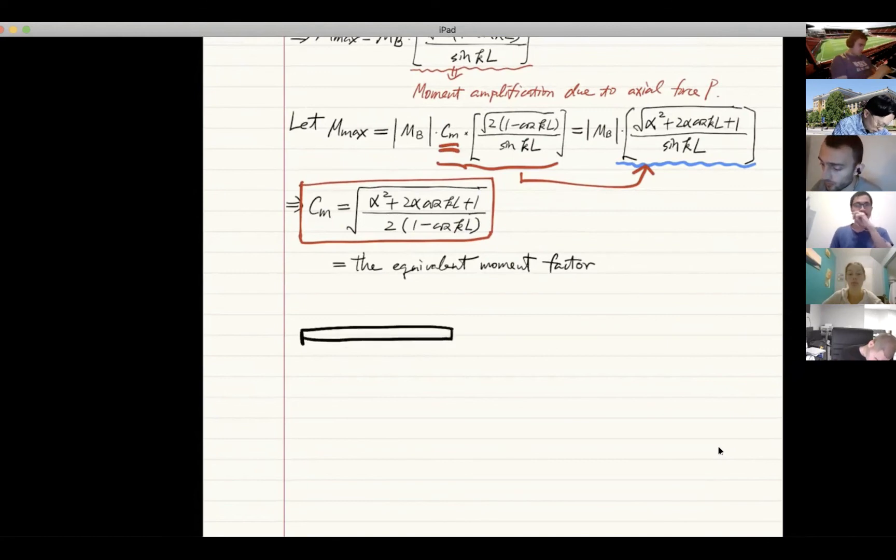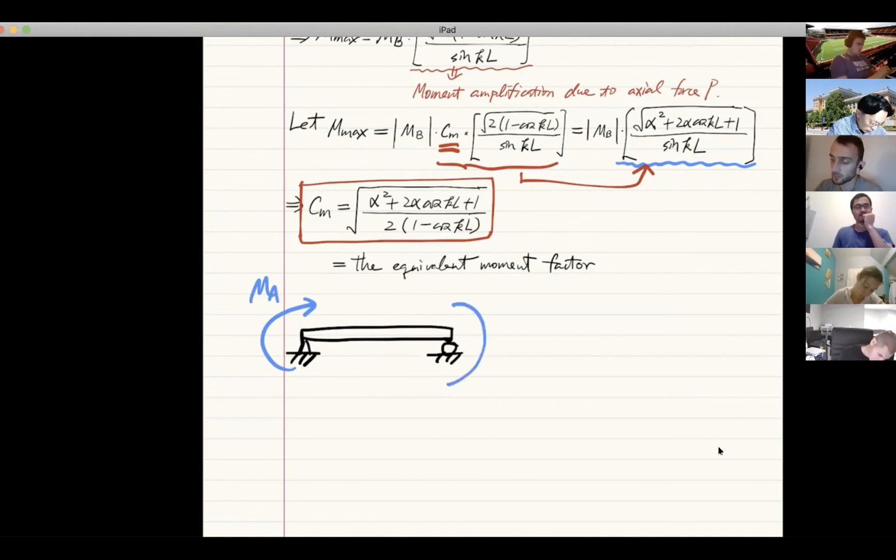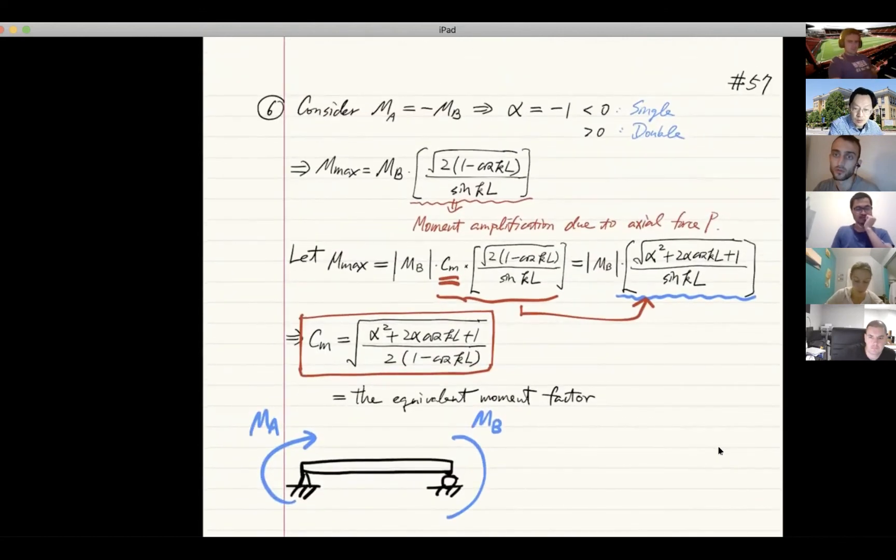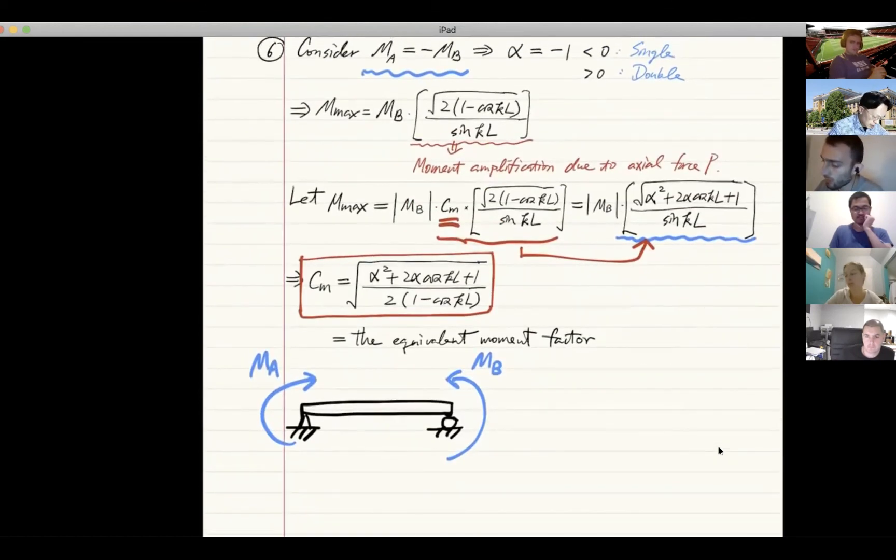If we have a beam column like this, and it's subjected to two end moments, suppose MA goes this way. Can anyone tell me what's the direction of MB? Remember, we said MA equals negative MB. So the direction of MB should be counterclockwise. Very good. That's how we use these equations here. So by definition, this is how we define the equivalent moment factor here. You can also draw the moment diagram, because one is here and the other here. Assuming that MB equals MA, it's going to be like this.